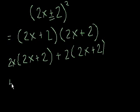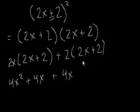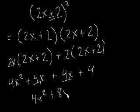2x times 2x, well, that's 4x squared. 2x times 2, that's 4x. And we're almost there. We just can add up these two terms. It's 4x squared plus 8x plus 4. And we're done.